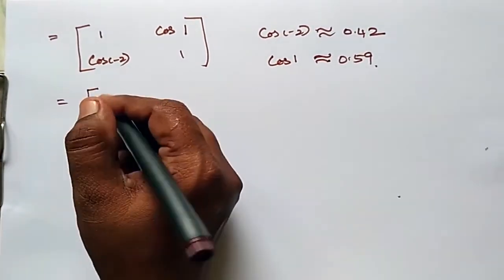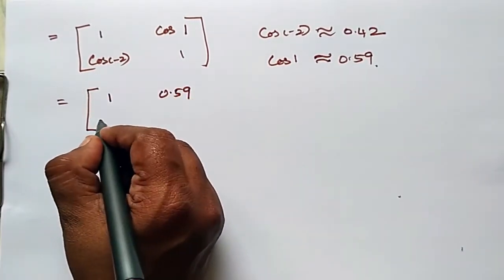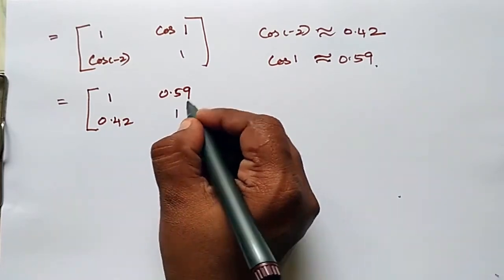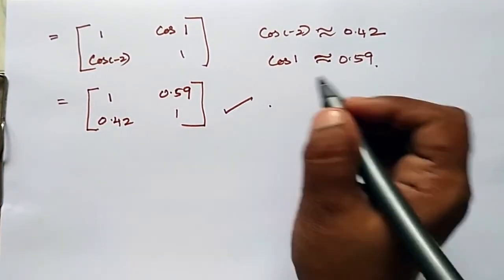Substitute the values: [1, 0.59; 0.42, 1]. This is the required matrix.